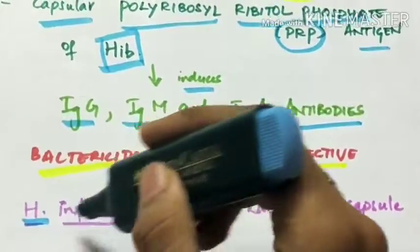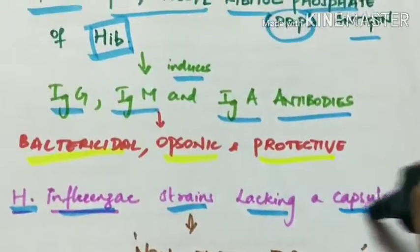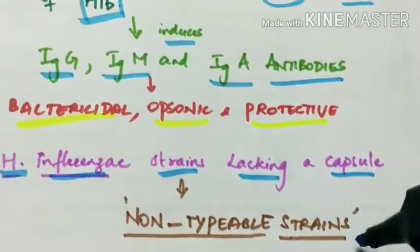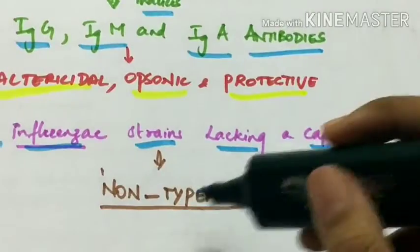Haemophilus influenzae strains which are lacking a capsule are called as non-typable strains. So few of the strains are non-typable.